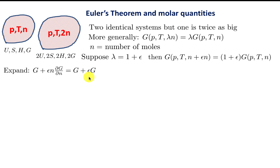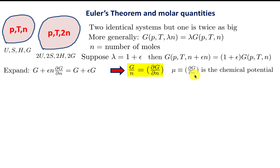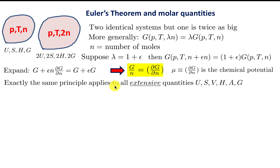This partial derivative ∂G/∂N at constant P and T is what we call the chemical potential μ — it measures how much the Gibbs free energy changes when you change the number of moles. The same principle applies to all extensive quantities: as we add more particles to the system, U, S, V, H, A all increase linearly with the number of moles.